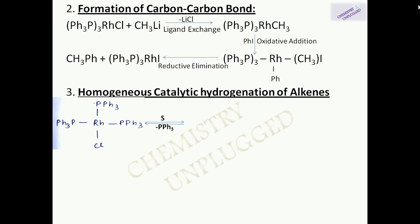Therefore we have to use heterogeneous and homogeneous catalysts for this reaction. In the first step, one PPh₃ group of Wilkinson's catalyst is removed and it is exchanged by a solvent molecule. This is necessary because the complex is very sterically hindered — it has nine phenyl groups — so to attach hydrogen atoms to the complex, we have to remove one or two PPh₃ groups. The PPh₃ is exchanged by a solvent molecule.